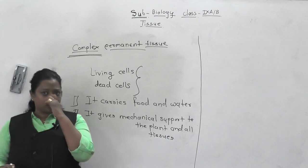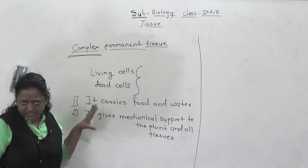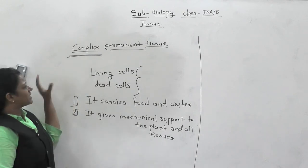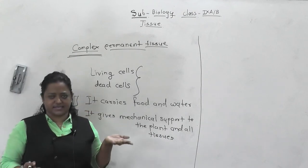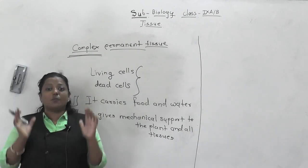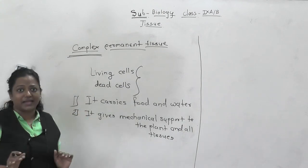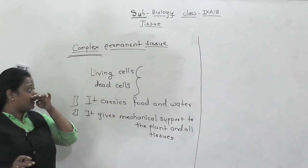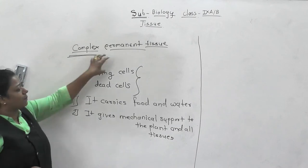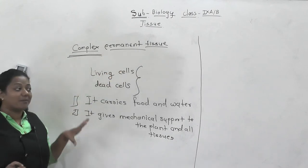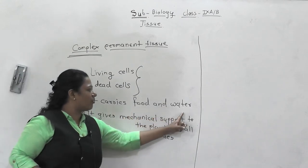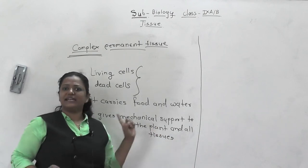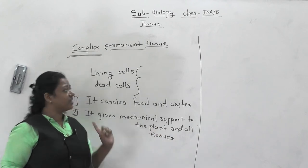There are two types of permanent tissue: simple permanent tissue and complex permanent tissue. Simple permanent tissues are made up of only one type of cell, while complex permanent tissues are composed of living cells and dead cells. The specific function performed by complex permanent tissue is to carry food and water as well as give mechanical support to the plant.